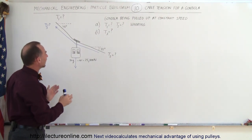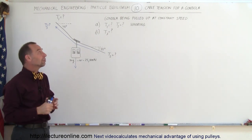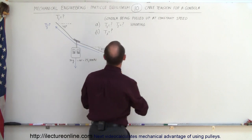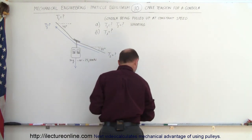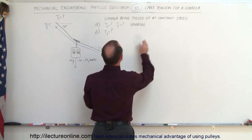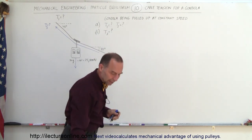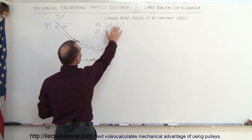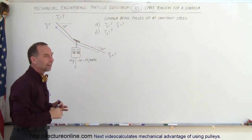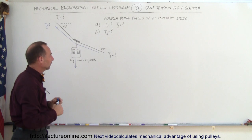How do we calculate the tensions on the black cable? We're going to find T1 and T2 first, and then for part B, we'll find out what force is required to pull the gondola upward.